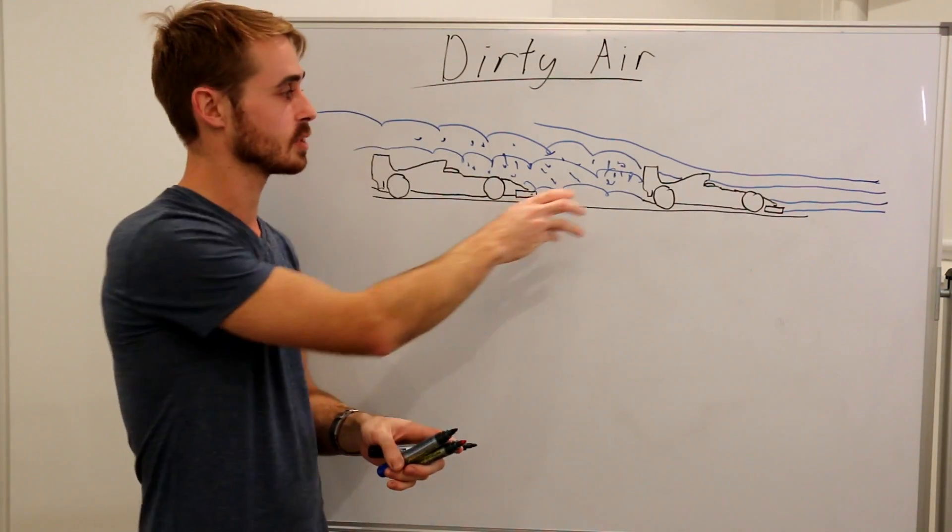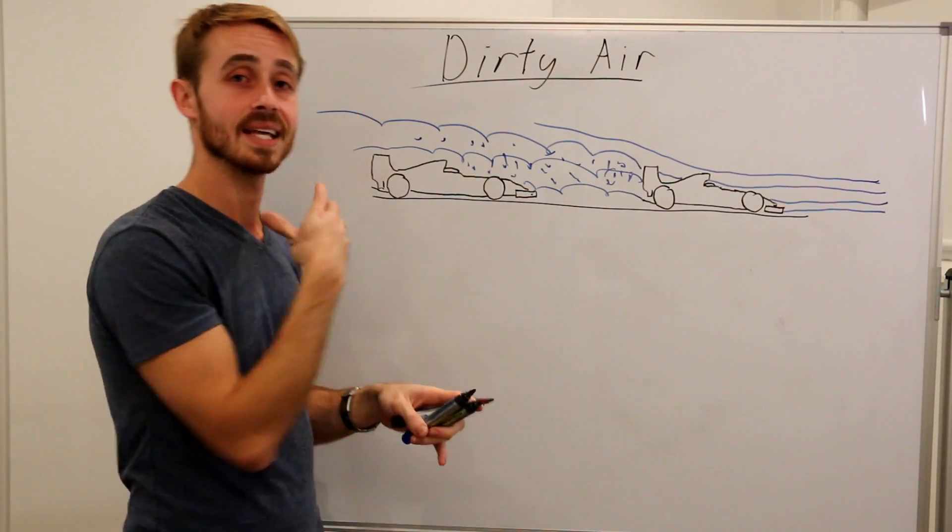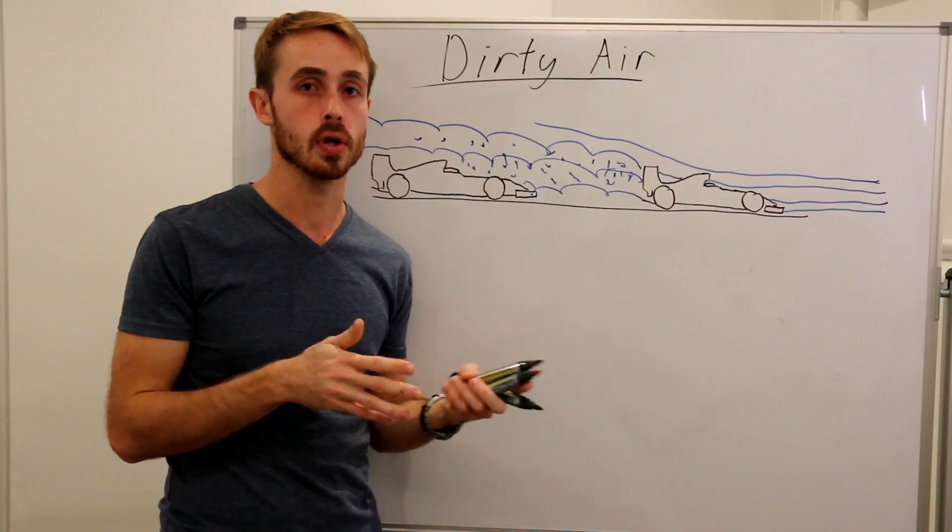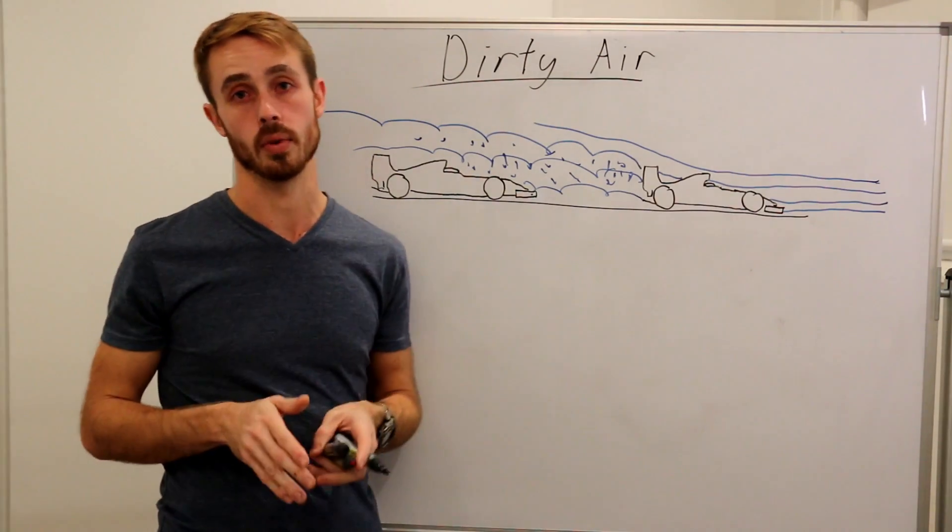Now the main reason is because when a car is following another car in such a situation that it might be able to overtake, it's getting slowed down by something that is commonly referred to as dirty air. Obviously if you already know what dirty air is you don't need to watch this video, this is for those who don't know what it is.